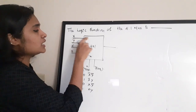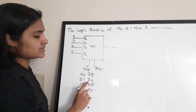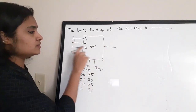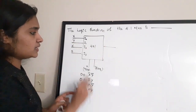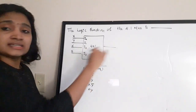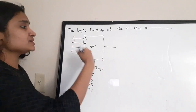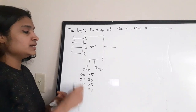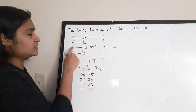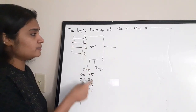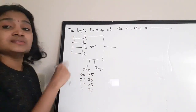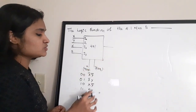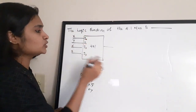When X̄Ȳ (00) is selected, output is I₀. When X̄Y (01), output is I₁. When XȲ (10), output is I₂. When XY (11), output is I₃. Now we need to write the logical expression in terms of X and Y, since both the select lines and inputs use those variables.